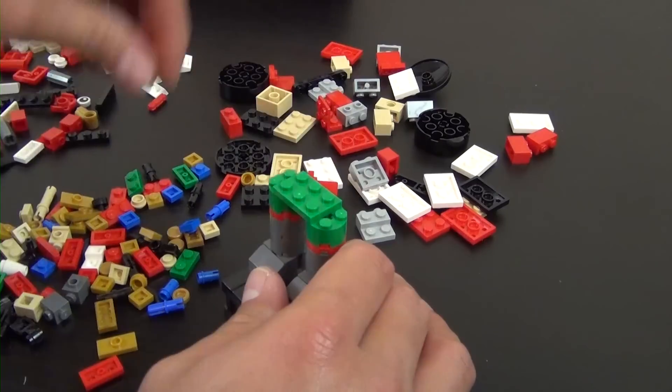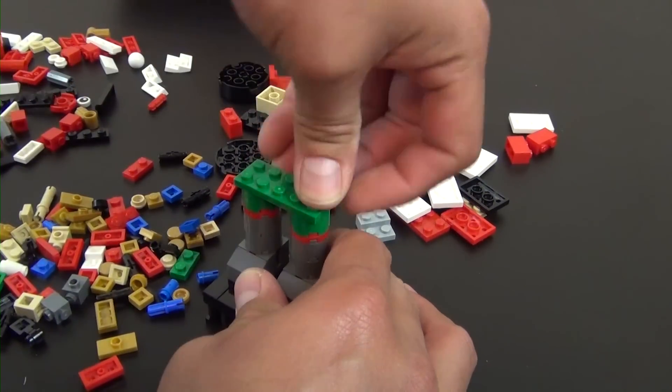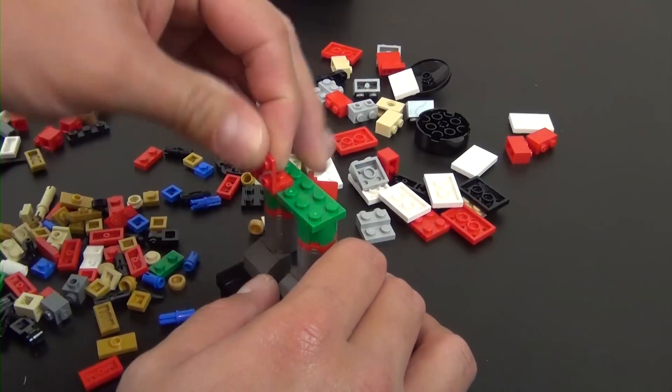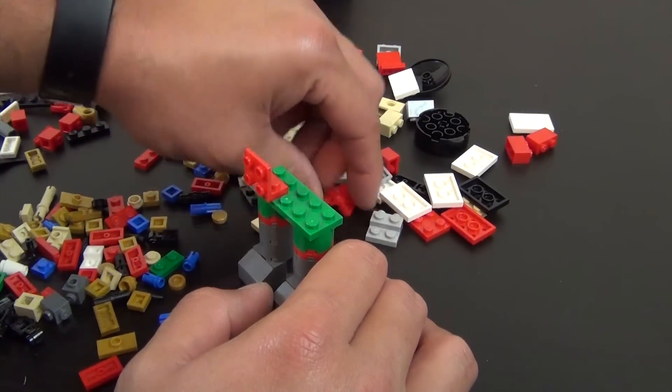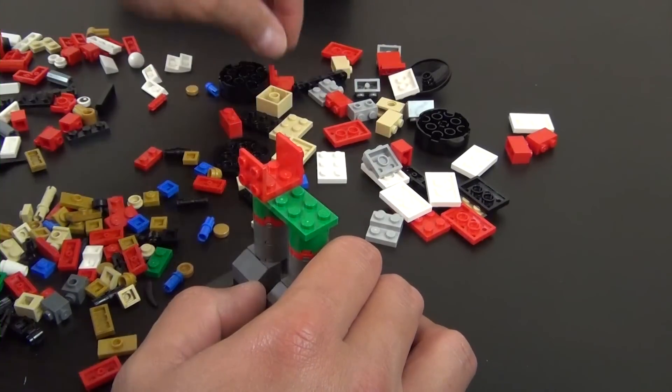These will attach to the jumper plates. Put a 2x3 green, a couple of these plates. Making a mess here, everything's slipping out of my hands.